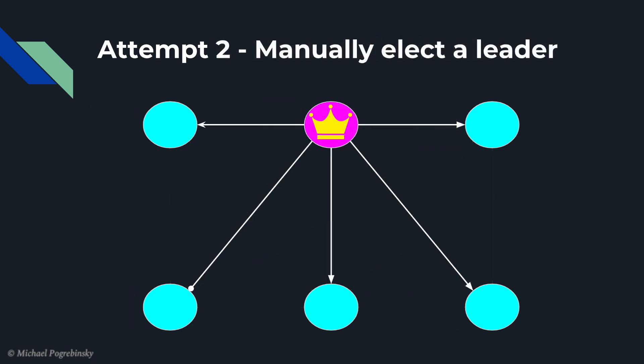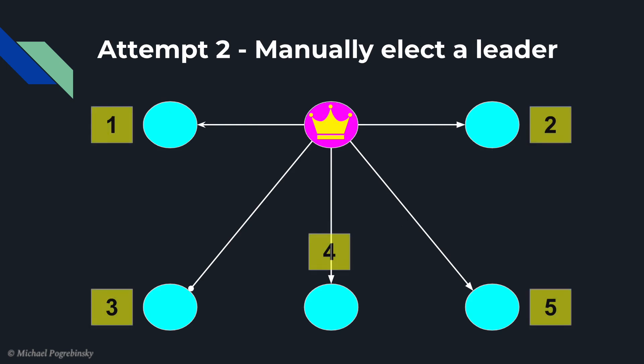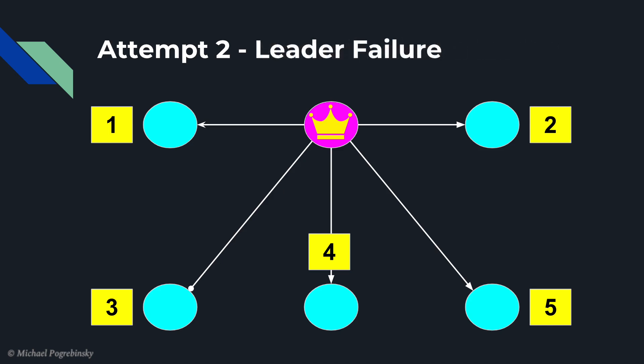So instead, we could manually decide on one special node to be the leader or the master. That master node will be in charge of distributing the work and collecting the results. This is better than our first approach, but the problem with that is all nodes can fail at any time, including that master node.